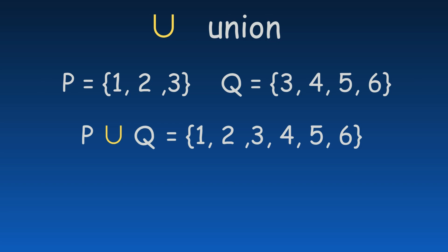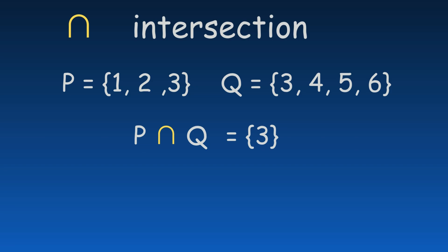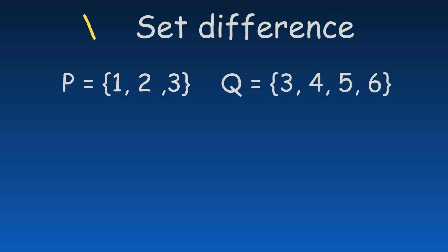The union symbol represents the operation of combining two sets, resulting in a new set that includes all unique elements from both. The intersection symbol is used when combining two sets, but the result only includes the elements they have in common. The set difference, shown with a backslash, gives a set containing all the elements from the first set that are not in the second.